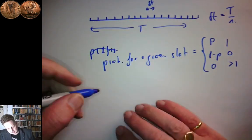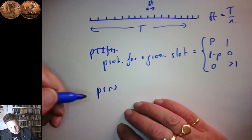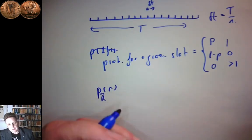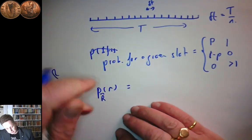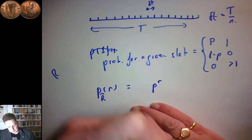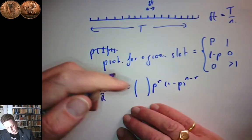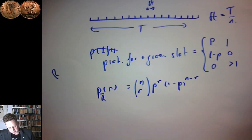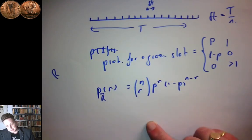We've divided time up into n little slots and we're going to ask: what's the probability of catching r fish? I'll call the random variable r̃ as an approximation to r, the actual number of fish caught. There are n slots, each with chance p of success, we're asking for r successes and n − r failures. This is just the binomial expansion. The probability of catching r fish is n choose r times p^r times (1 − p)^(n−r).